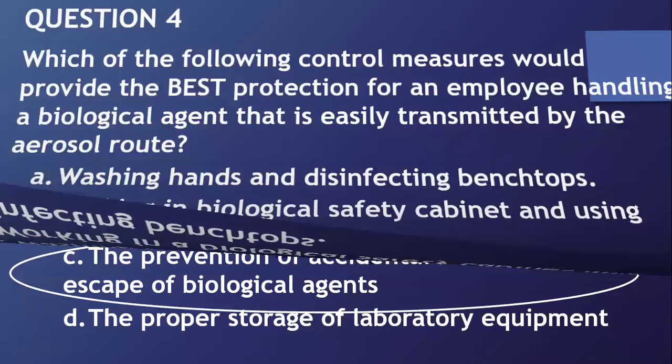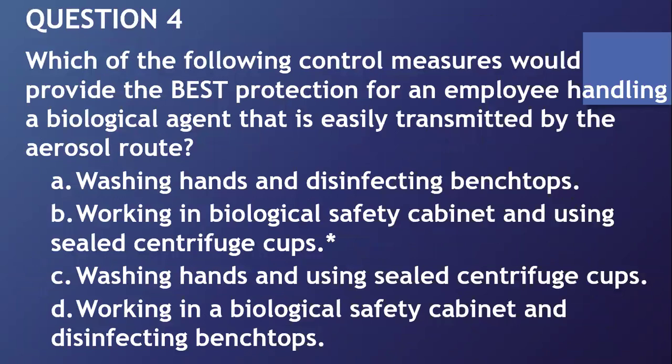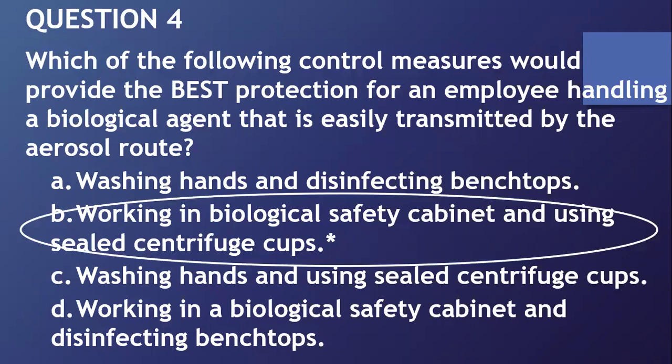Question number four: which of the following control measures would provide the best protection for an employee handling a biological agent that is easily transmitted by the aerosol route? A, washing hands and disinfecting bench tops. B, working in a biological safety cabinet and using sealed centrifuge cups. C, washing your hands and using sealed centrifuge cups. D, working in a biological safety cabinet and disinfecting bench tops. The answer is B.